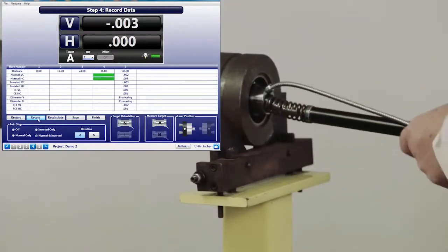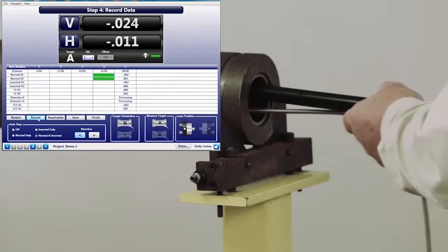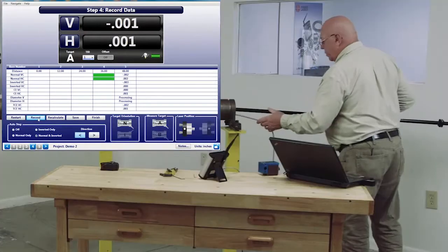Because we're taking normal and inverted at each position, it always starts with the normal position. So I'm going to turn it back to normal. I'm going to take it in 12 inches to the first hole.